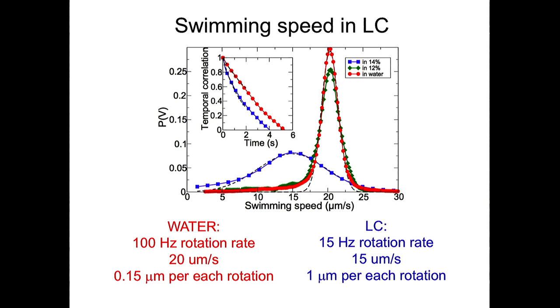The rotation rate of the flagella in water is about 100 hertz. The rotation rate in liquid crystal is 15 hertz. So it's seven times less. But the swimming speed is only 25% less, which means that while in water single bacterium travels 0.15 microns per each rotation of flagella, somehow in liquid crystal the same bacterium travels one micron per each rotation of flagella. So it's like a corkscrew motion. Much more efficient.